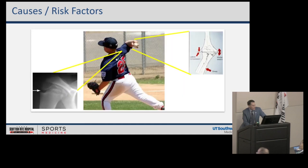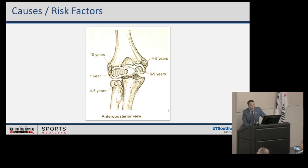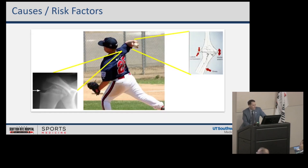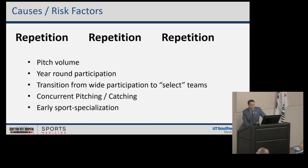When you get the arm in that position with medial tension, lateral compression, and shear and rotation, these little growth plates are all under a lot of stress. It's not just the growth plates but the interface between cartilage and bone that's developing inside. The problem is not one or two episodes — it's repetition. That's the theme: repetition.